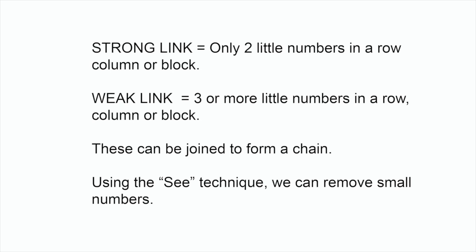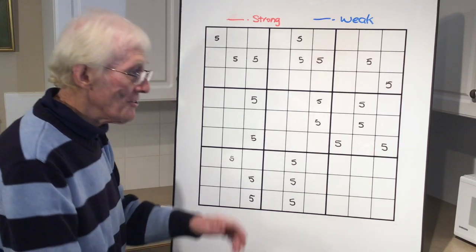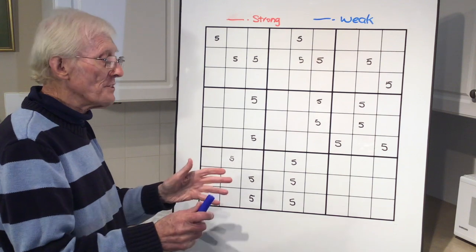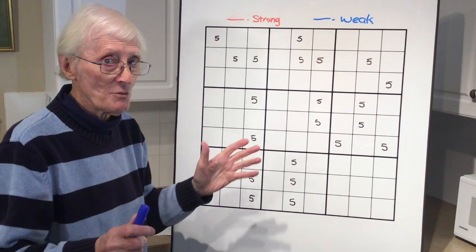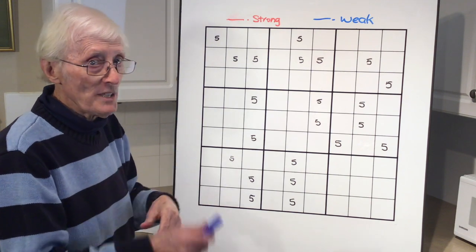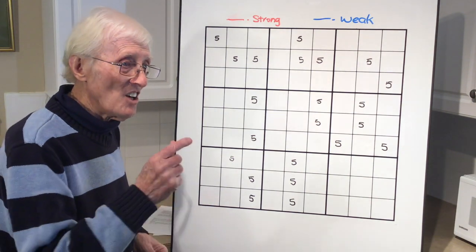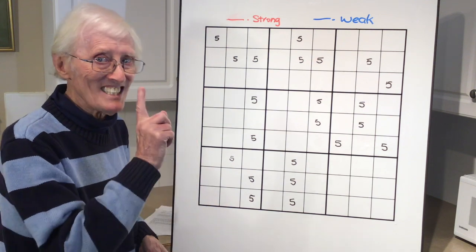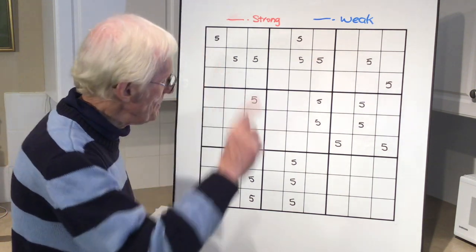Now, these can be joined to form a chain. Using the C technique, we can remove small numbers. As you know, quite often you have all kinds of little numbers when you get to advanced levels. There's lots of little tricks and techniques to get rid of those, and this is one of them.